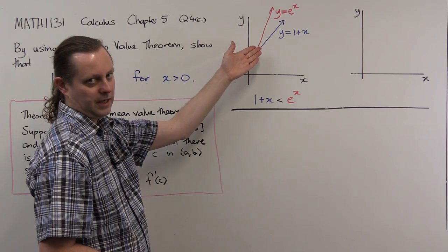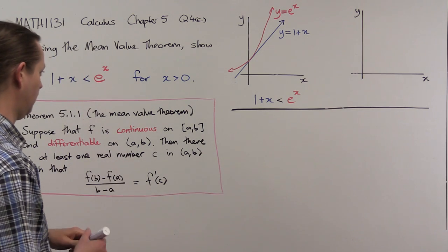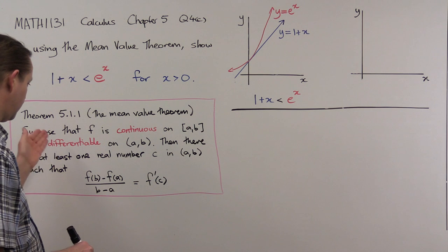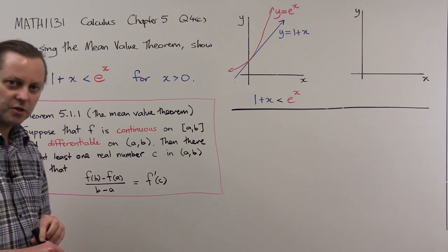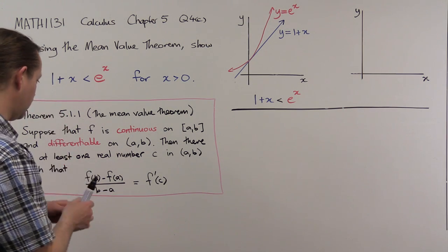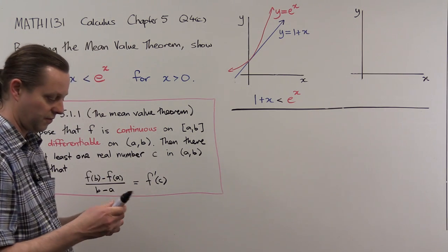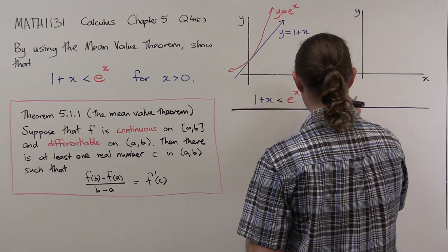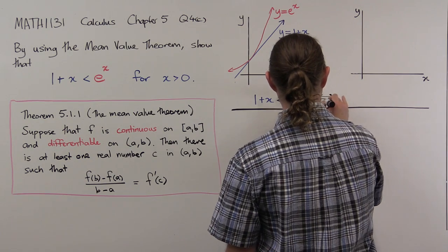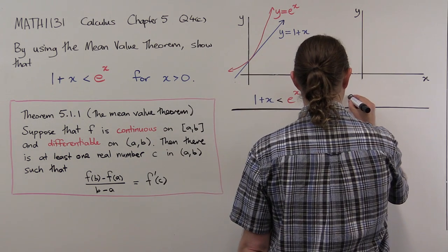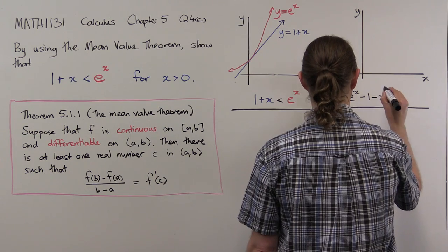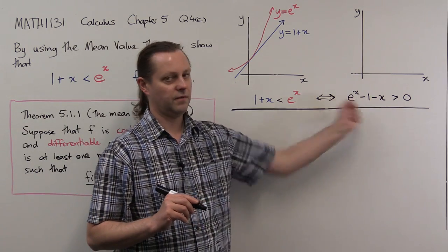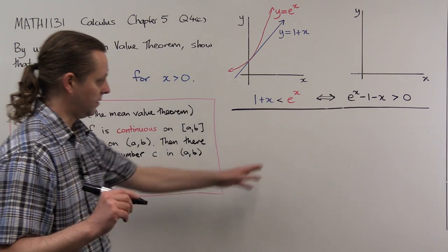This picture might be misleading, so we want to actually prove this rigorously using the mean value theorem. The first condition of the mean value theorem requires f to be continuous and differentiable, so we need to check that for any function we use. There are several functions here, so I'll rearrange this inequality to write it as a single function greater than 0. Taking everything to one side: e to the x minus 1 minus x is greater than 0.